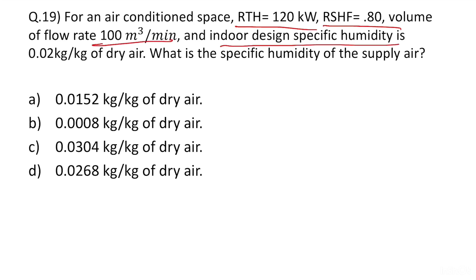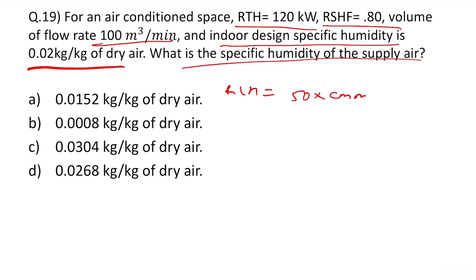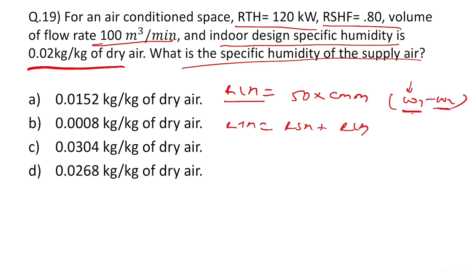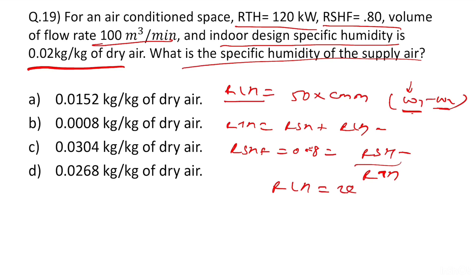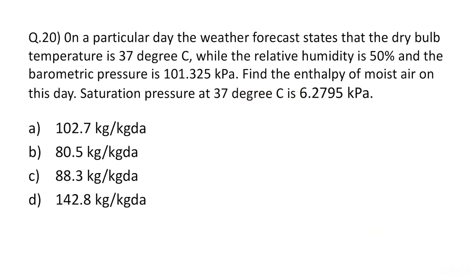Question 19 is about room total heat, flow rate, and specific heat. We need to find the specific humidity of supply air. The formula for room latent heat is: RLH = 50 × CMM × (W1 − W2), where W1 is specific humidity of inside air and W2 is specific humidity of supply air. Since Room SHF = 0.8 = RSH / RTH, and RTH = RSH + RLH, we get RLH = 24. Substituting: 24 = 50 × 100 CMM × (0.02 − W2). Solving gives W2 = 0.0152, so the answer is A.